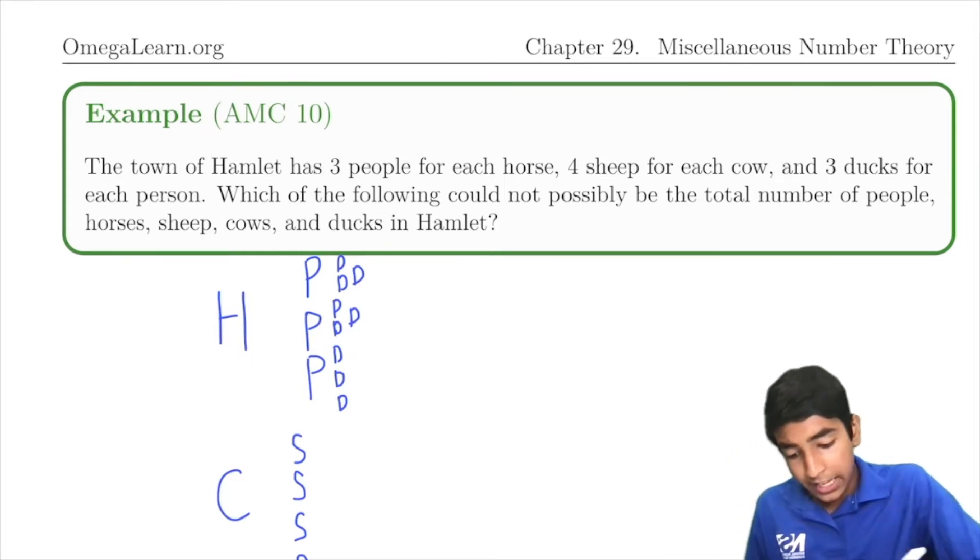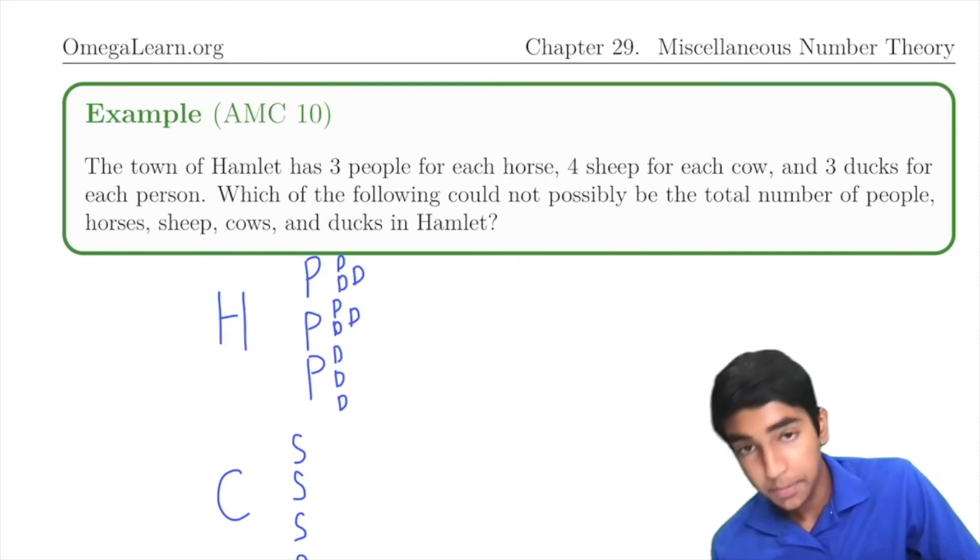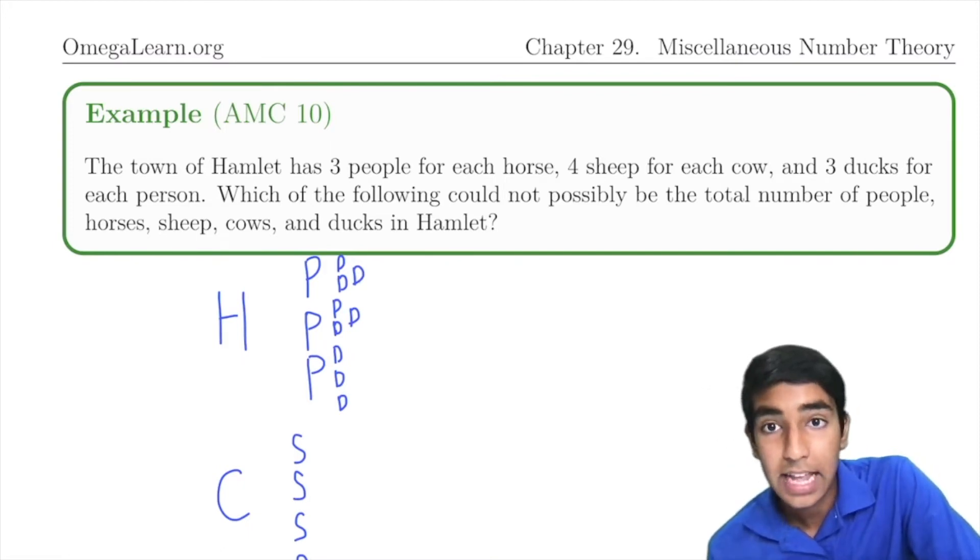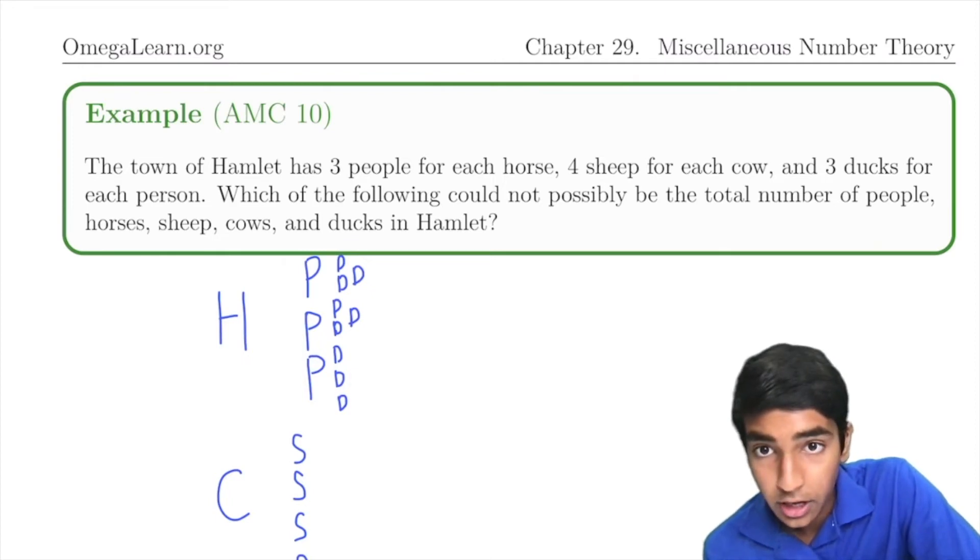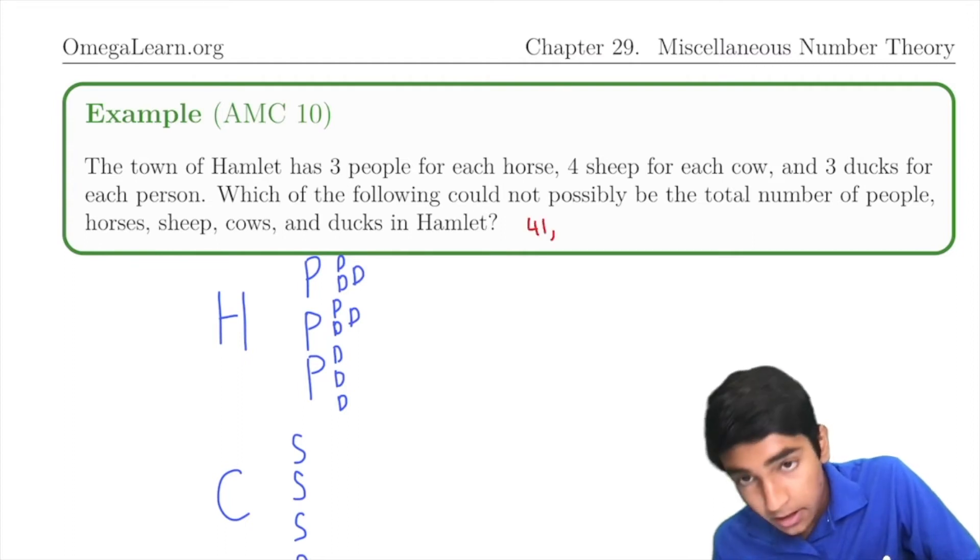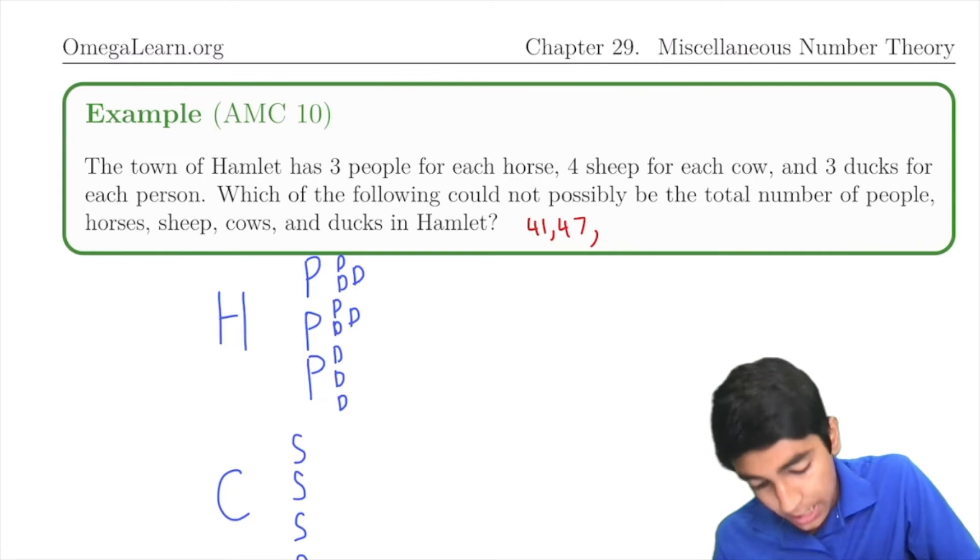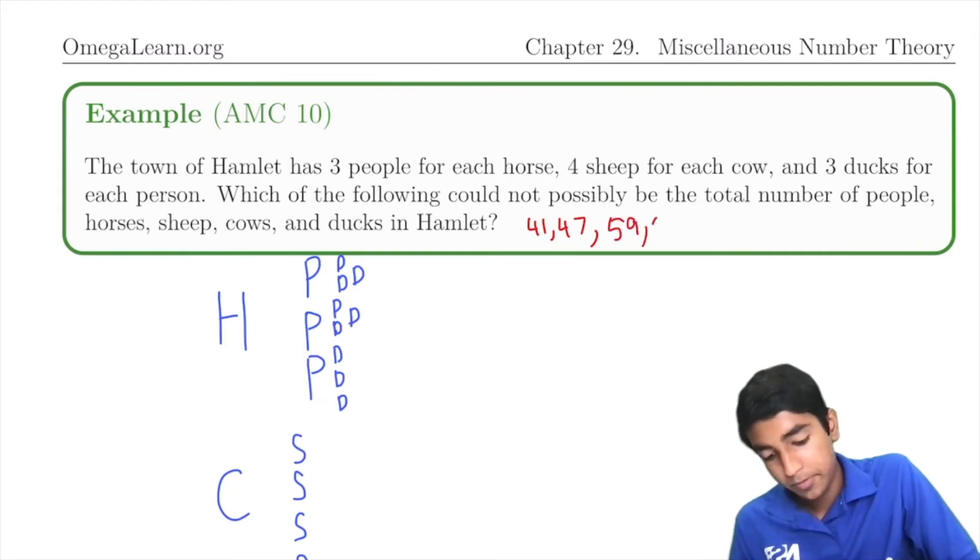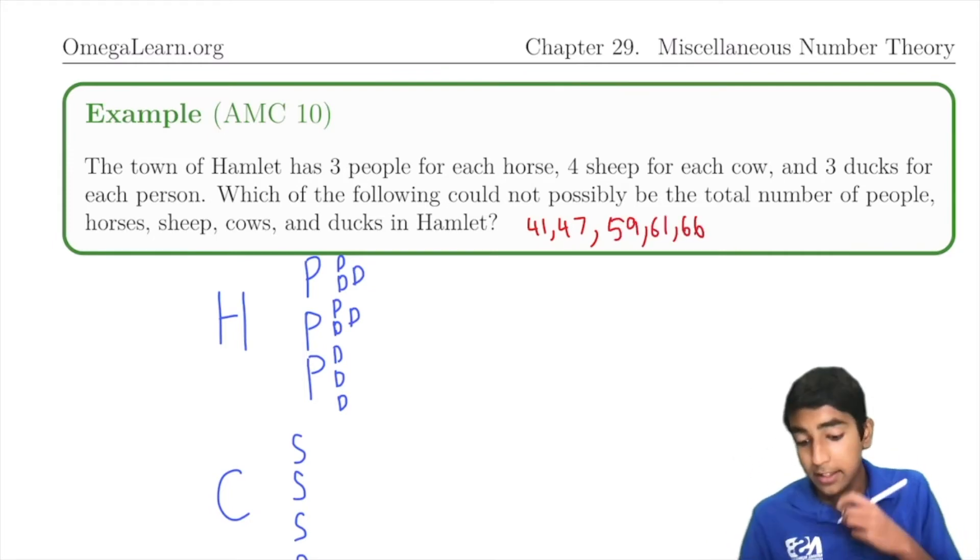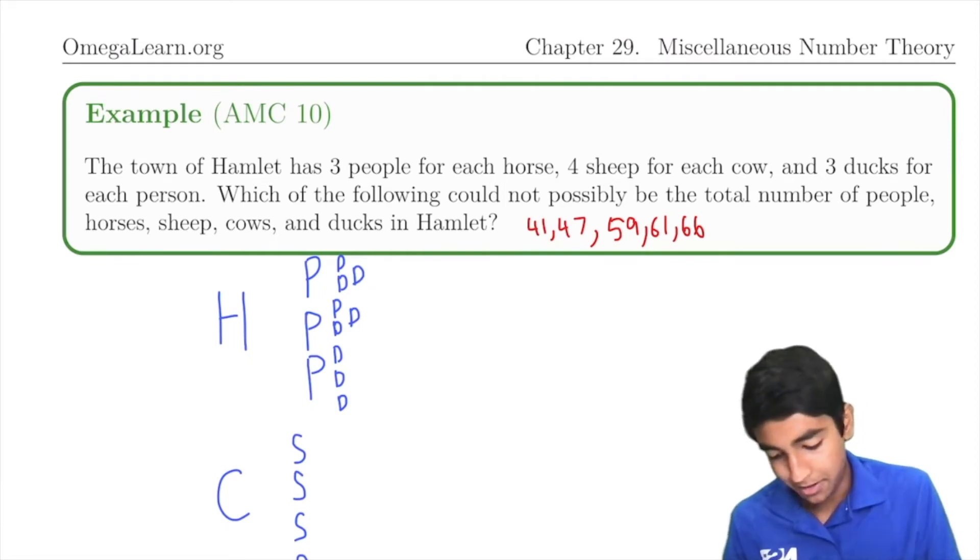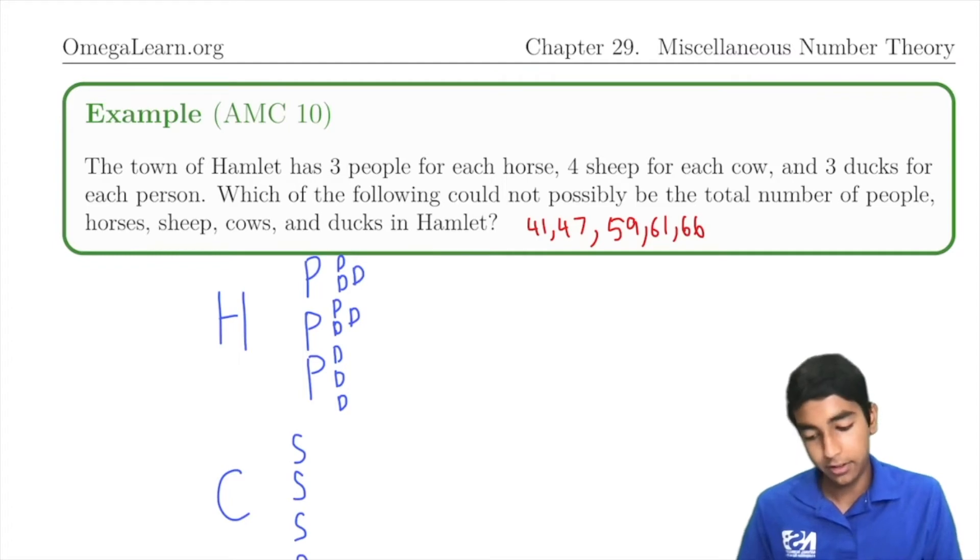We're asked to find which of the following cannot possibly be the total number of people, horses, sheep, cows, and ducks. And the answer choices are 41, 47, 59, 61, and 66. So which of these cannot possibly be the total number of people, ducks, cows, sheep, and horses?